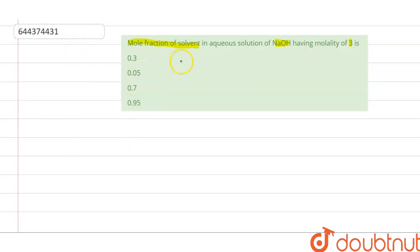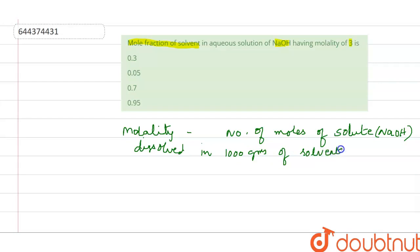Now let us understand what is molality. Children recall what is molality - it is the number of moles of solute, and what is solute over here? It is NaOH. Solute is NaOH dissolved in 1000 grams of solvent.